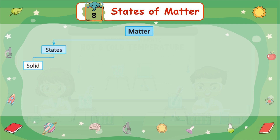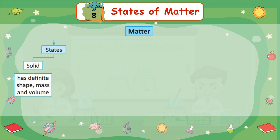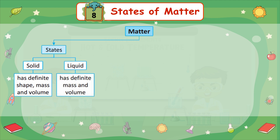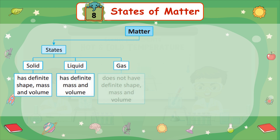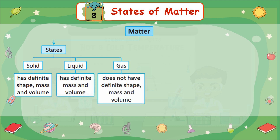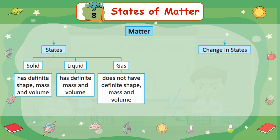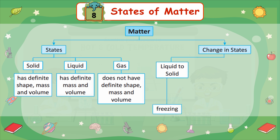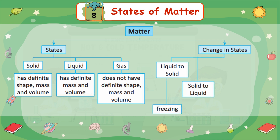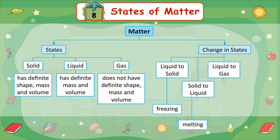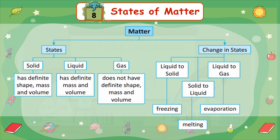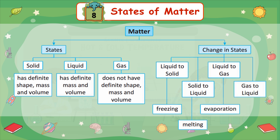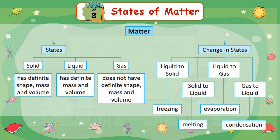Summary — Matter and its states: Solid has definite shape, mass, and volume. Liquid has definite mass and volume. Gas does not have definite shape, mass, and volume. Change in states: Liquid to solid is freezing; solid to liquid is melting; liquid to gas is evaporation; gas to liquid is condensation.